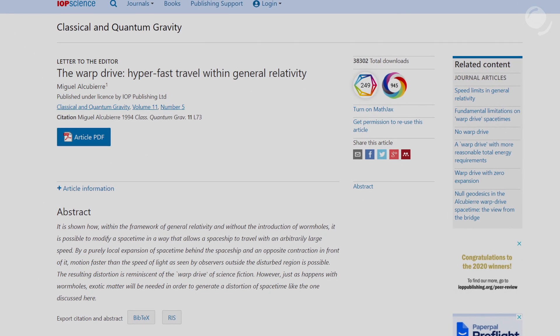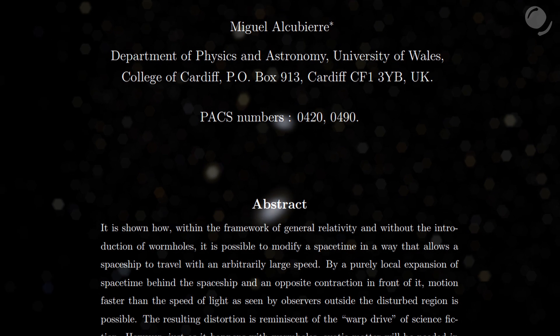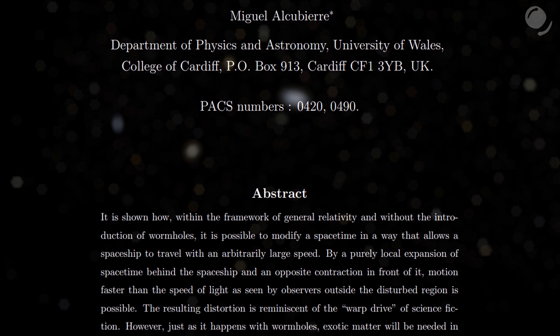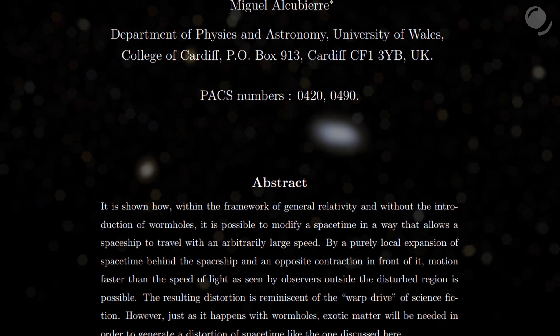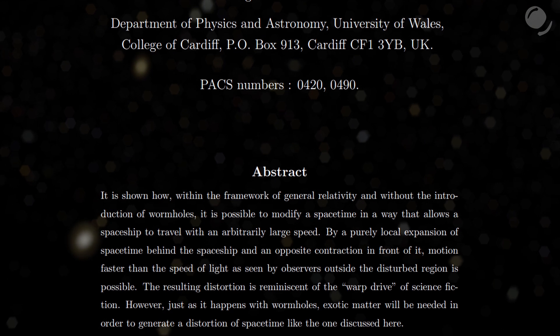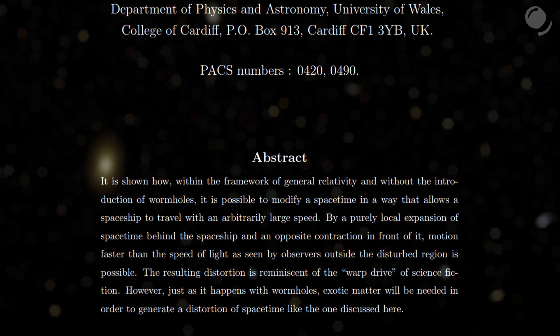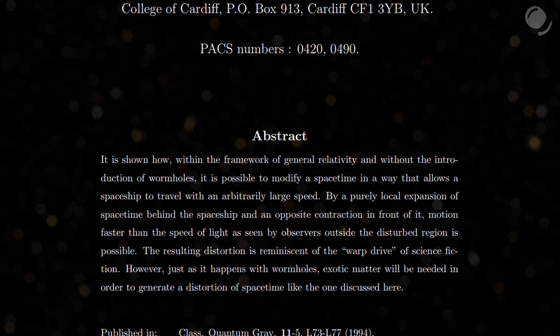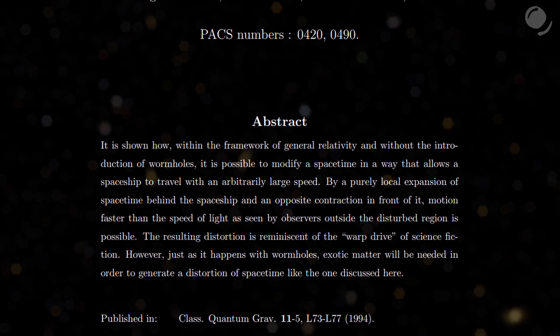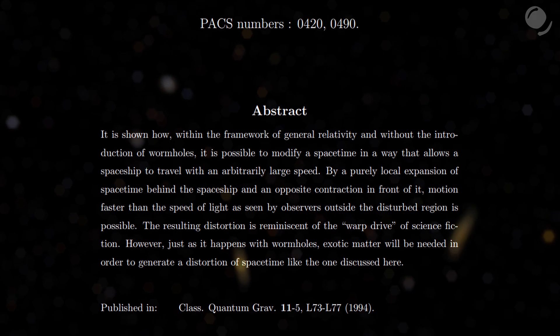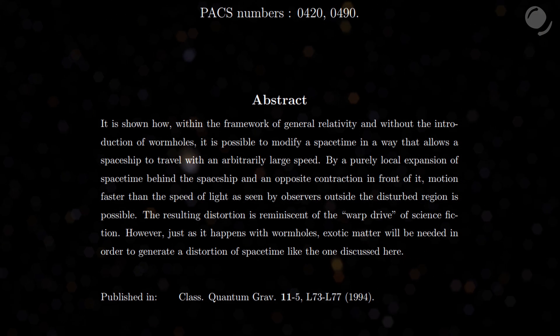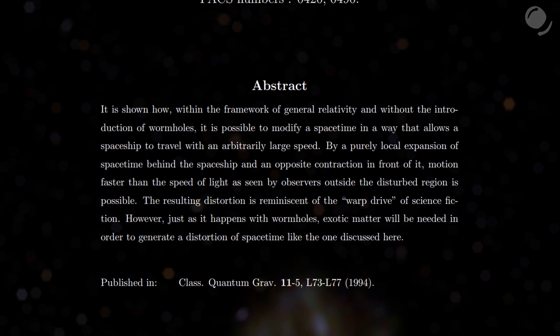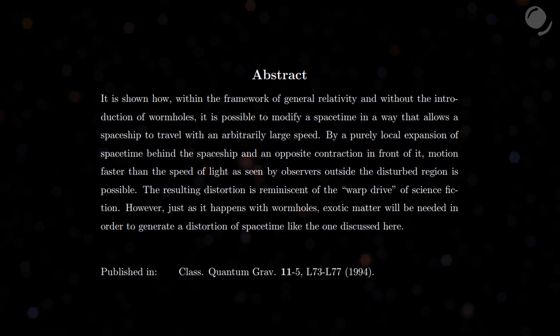So what's the basic principle of the Alcubierre drive? Let's address the origin source. Alcubierre's original study from 1994. The abstract is short so I'll just read it. It is shown how within the framework of general relativity and without the introduction of wormholes, it is possible to modify a spacetime in a way that allows a spaceship to travel with an arbitrarily large speed, by a purely local expansion of spacetime behind the spaceship and an opposite contraction in front of it. Motion faster than the speed of light, as seen by observers outside the disturbed region, is possible. The resulting distortion is reminiscent of the warp drive of science fiction. However, just as it happens with wormholes, exotic matter will be needed in order to generate a distortion of spacetime like the one discussed here.